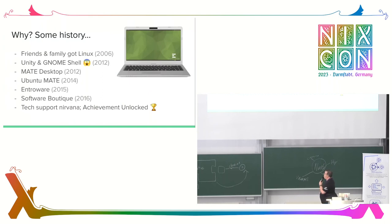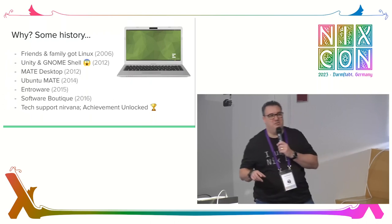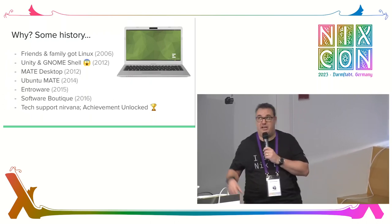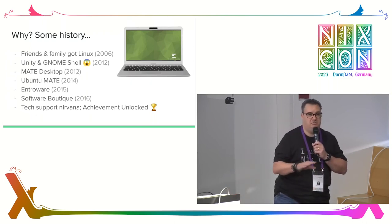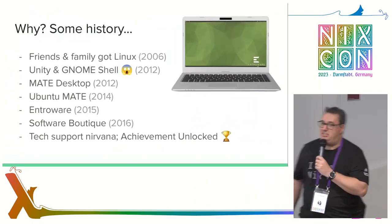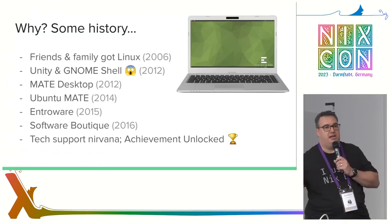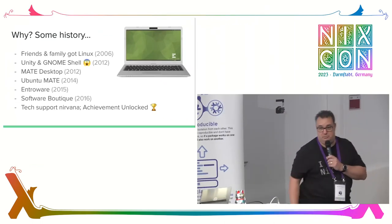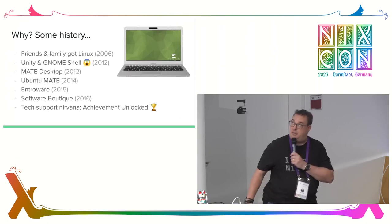So why am I doing this? Some history. In 2006, I gave my family and friends an ultimatum: if you want to continue to get tech support from me, you have to run Linux. And they agreed. That started with Ubuntu 6.06 running GNOME 2, and we had a good six-year streak of no significant problems. They were very happy with the GNOME 2 user interface. Then in 2012, the Unity desktop from Canonical was the default in Ubuntu, and GNOME was taking a new direction with the GNOME 3 shell — and that was utterly rejected by my friends and family, most distinctly by my wife.